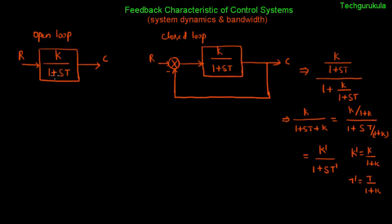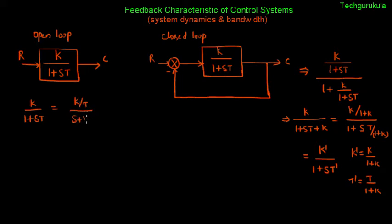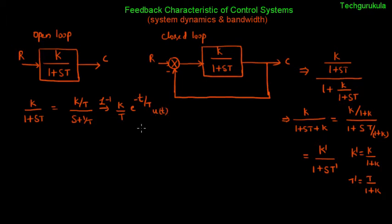To compare, I will first find the impulse response of the open loop system, which is the inverse Laplace transform of the transfer function itself. The transfer function k/(1+sT) can be rewritten as (k/T) divided by (s + 1/T). Taking the inverse Laplace transform gives (k/T)·e^(−t/T)·u(t), indicating the response is valid only for t greater than 0.